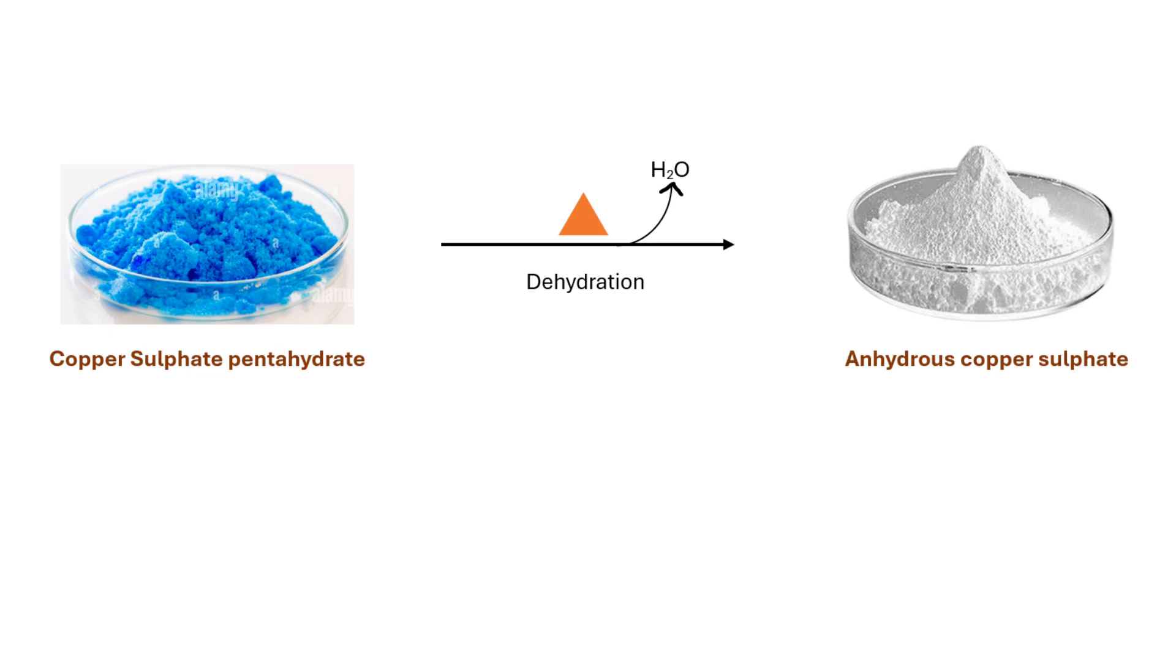This process is also accompanied by a change in the color, usually from deep blue to an almost colorless solid. The equation for the dehydration of hydrated copper sulfate can be represented as follows.